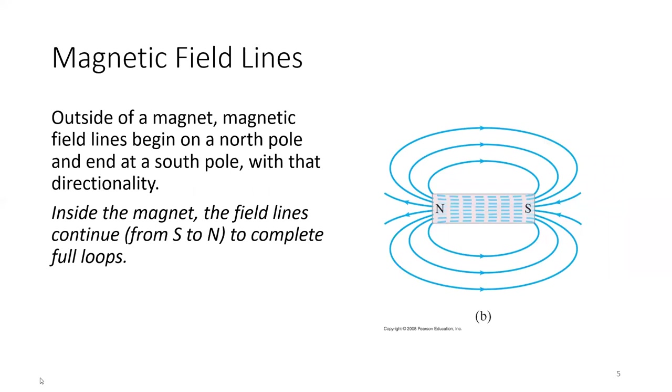Our magnetic field lines have directionality. Outside the magnet, we're going to draw magnetic field lines as emanating from the north pole and ending at the south pole of our magnet. Those magnetic field lines actually continue within the magnet from south to north, forming a complete loop. Magnetic field lines form loops, not just lines, and part of that is because we always have our magnets as dipoles with a north and a south end.